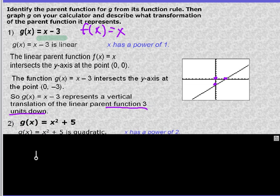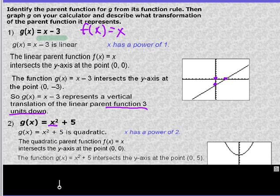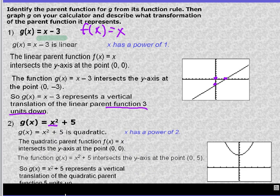g of x equals x squared plus 5. You probably notice with the x squared, it's going to be a quadratic function as a parent function. If you graphed it, it looks like this. What happened to it? It moved up 5 units. Pretty soon we're going to be able to look at the equation without graphing and figure out what the transformations are.